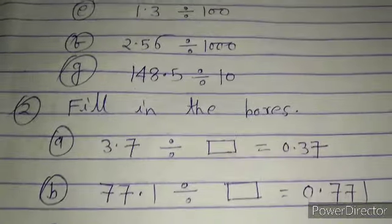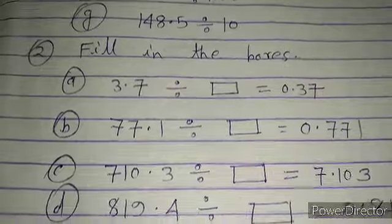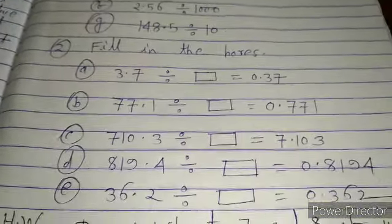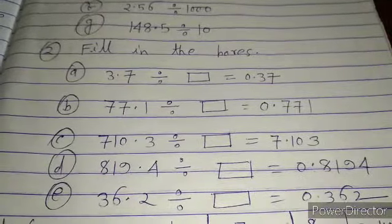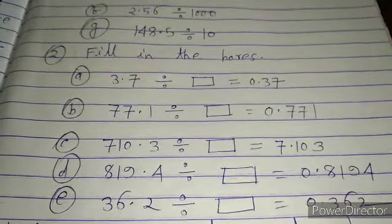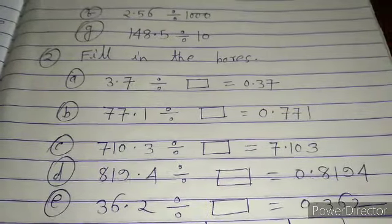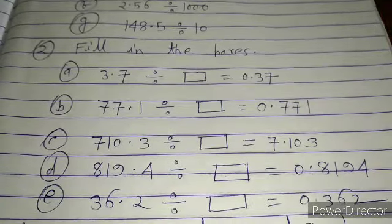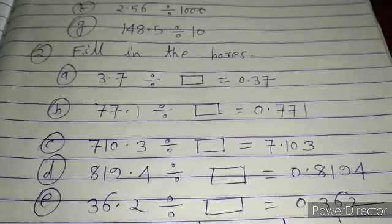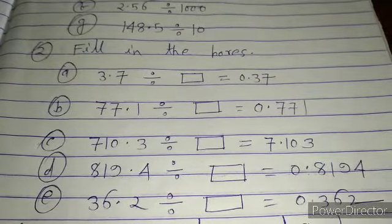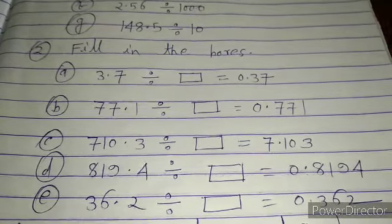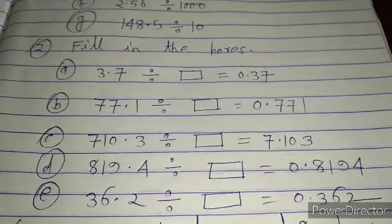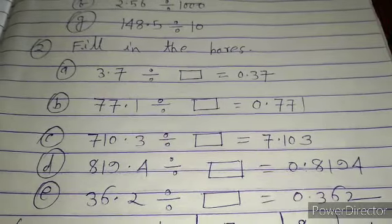Question 2: fill in the boxes. A: 3.7 ÷ box = 0.37. B: 77.1 ÷ box = 0.771. C: 710.3 ÷ box = 7.103. D: 819.4 ÷ box = 0.8194. E: 36.2 ÷ box = 0.362.